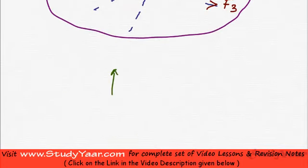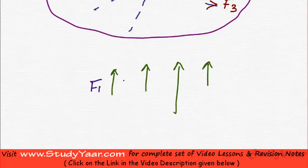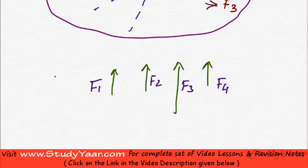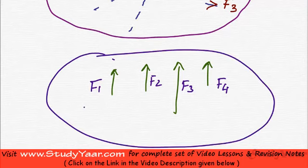So in parallel force system, my forces are going to be like this. Their line of actions would be parallel. This would be F1, this would be F2, F3, F4. These are in the same plane as that of the screen but their line of actions are parallel. Therefore, I say these constitute a coplanar parallel force system.